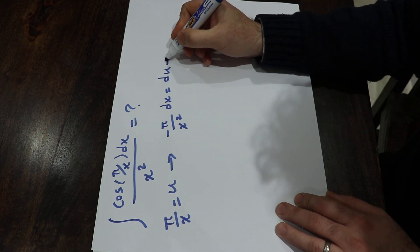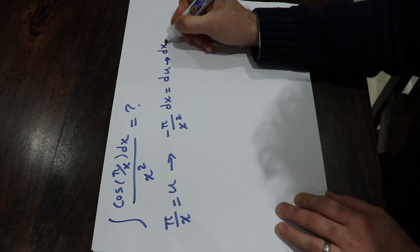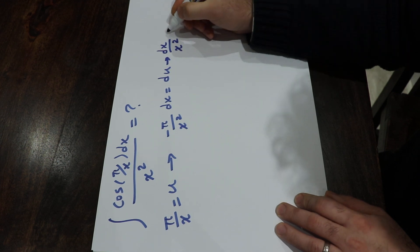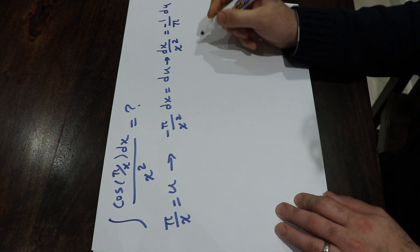Okay, so in other words dx over x squared will be equal to minus 1 divided by pi du.